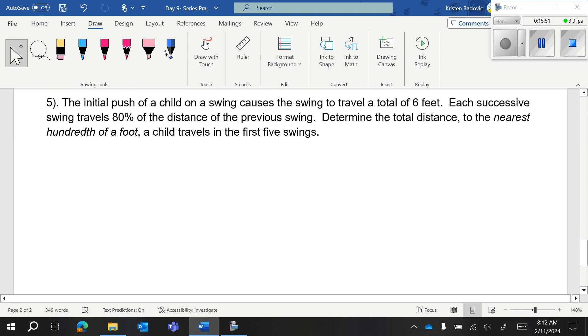Last one. We have the initial push of a child on a swing causes the swing to travel a total of six feet. Now because they said initial, that sounds like A sub 1 equals 6 to me. Each successive swing travels 80% of the distance of the previous swing. So this is your value of r. They're telling you how much you're keeping. So usually they tell you how much you're losing. And if you're losing, that would be the rate. It'd be one minus the 20% that you're losing. But here they're just flat out saying you're keeping 80%. You won't have to do anything with it. They want you to find the total distance. So total to me means series, the nearest hundredth of a foot a child travels on the first five swings. So N is equal to 5.